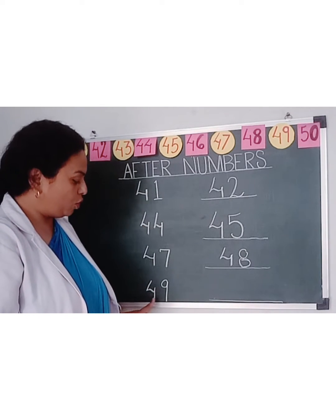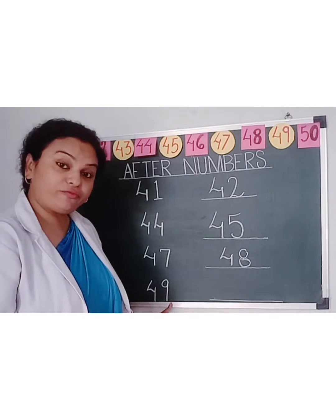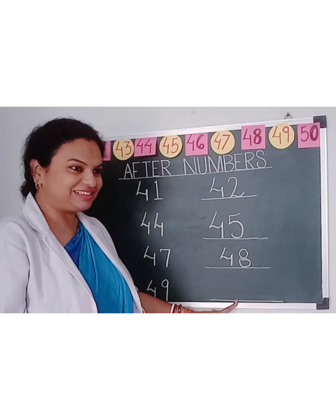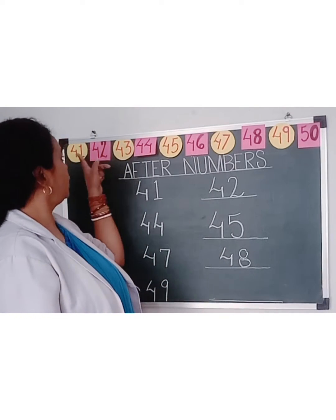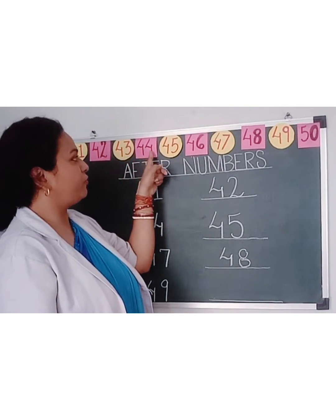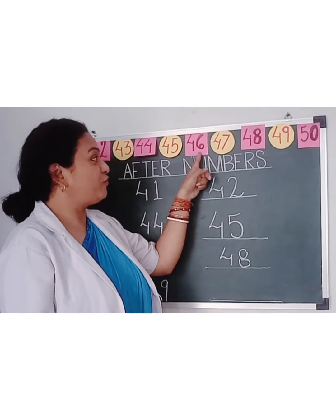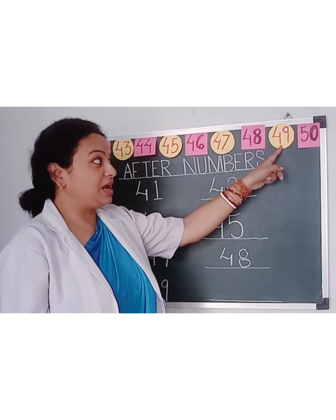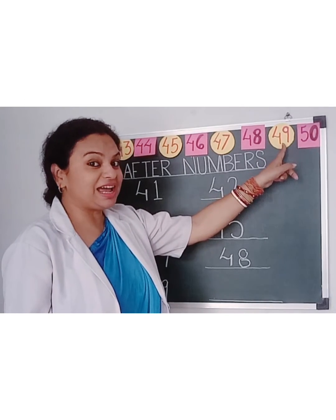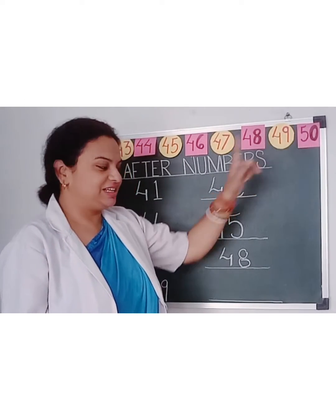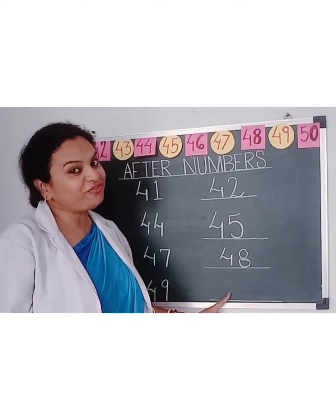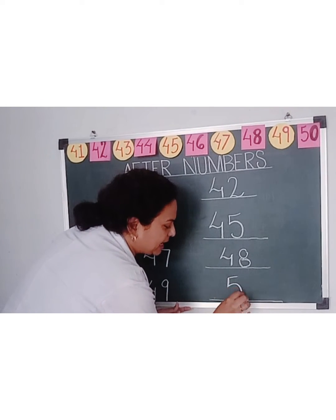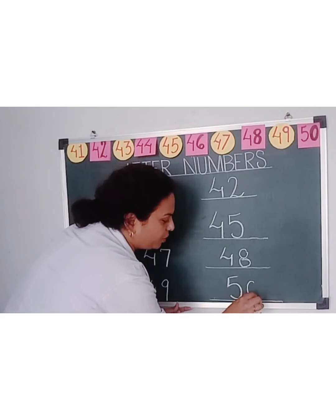Now, 49. So, what will come after 49? 41, 42, 43, 44, 45, 46, 47, 48, 49. And what is the next number of 49? 50. So, let's write here 50. 5, 0, 50.